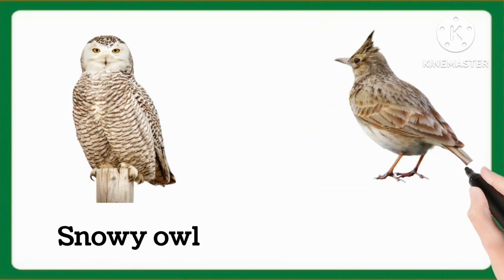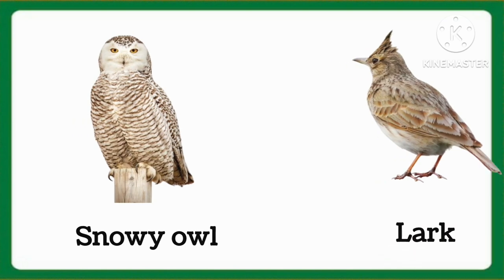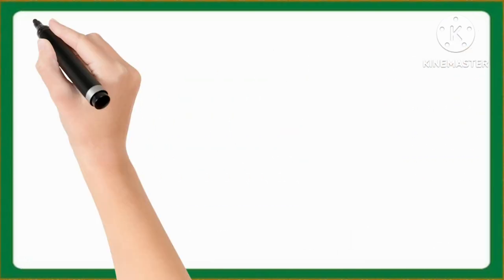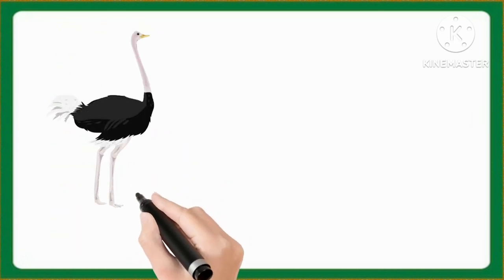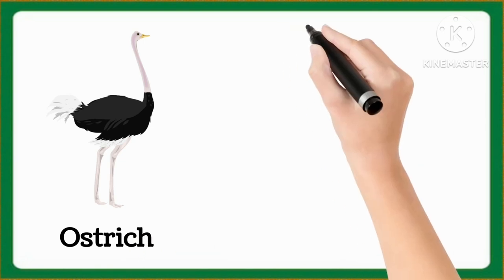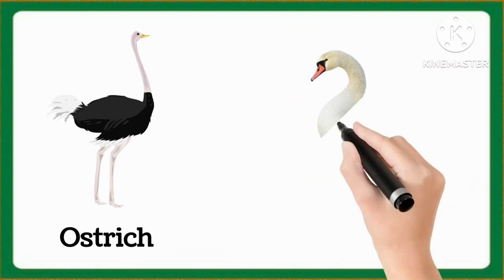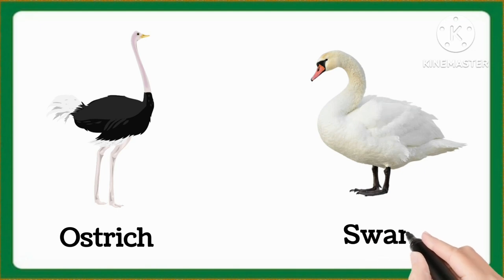And tell me which word is this, kids? This is lark. Lark. And now tell me which word is this, kids? This is ostrich. Ostrich. And now tell me which word is this, kids? This is swan. Swan.